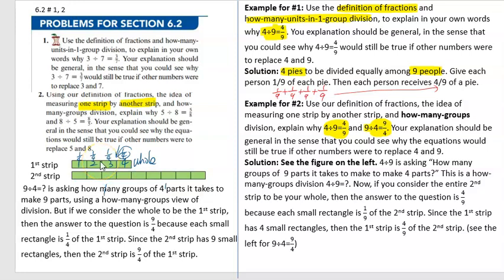Another way to look at it: we consider the first strip as the whole, the reference amount of 1, and each part has size 1/4. We need to ask: how many of these parts with size 1/4 does it take to cover the second strip? We have 1/4, 1/4, 1/4,